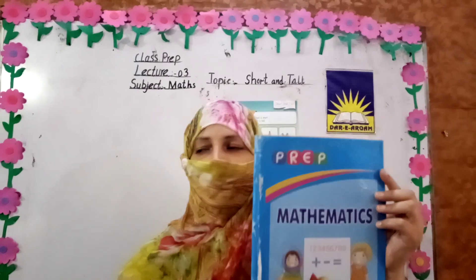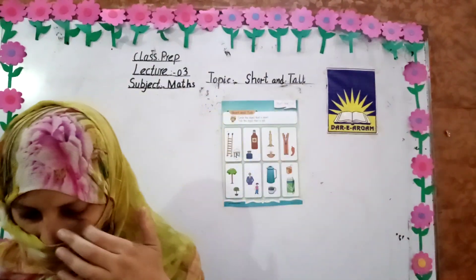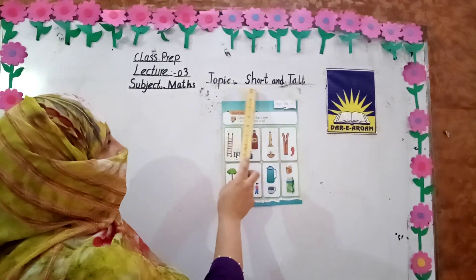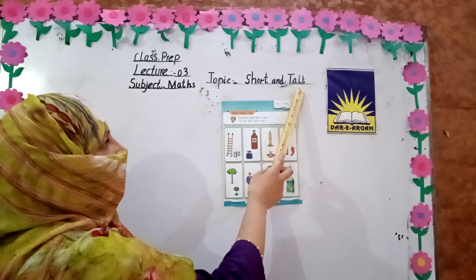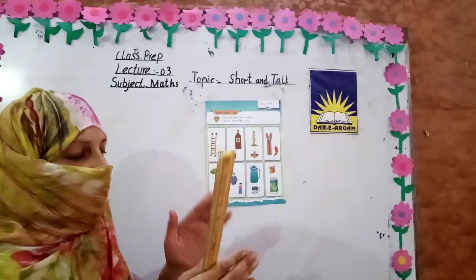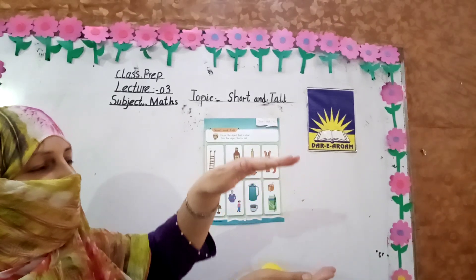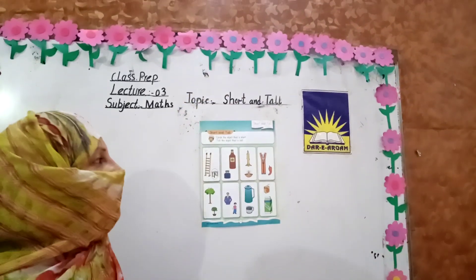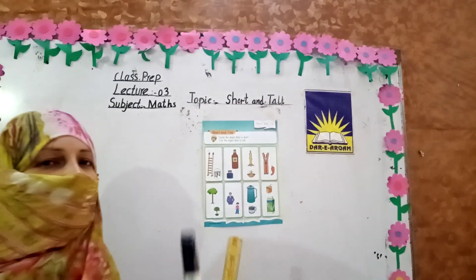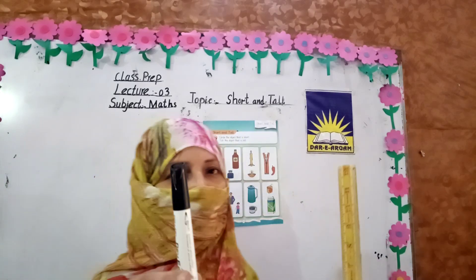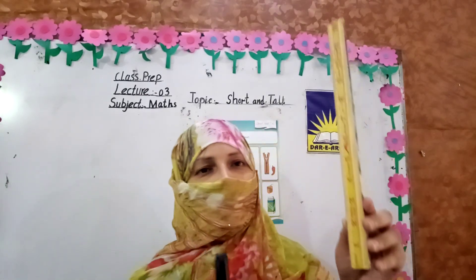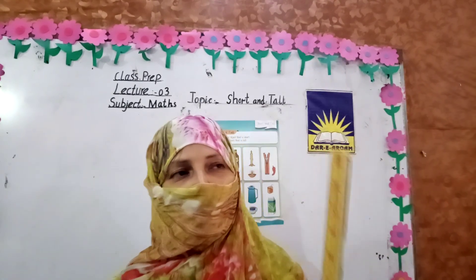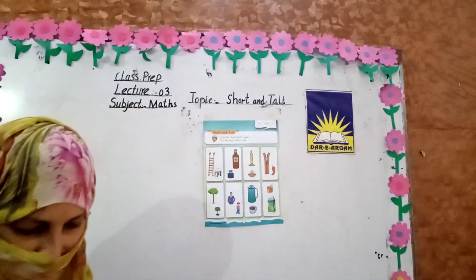First, all the students look at the board. This is my third lecture, students. The topic is short and tall. Short means short and tall means this one. Short, tall. Short, tall. Let's start work. Look at the board.